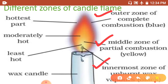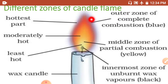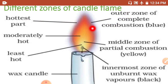The outermost zone is blue in color — you can see the lightest blue on the outside. The outermost zone is the hottest part of the flame. It is also the zone where complete combustion takes place, which is why it is blue.